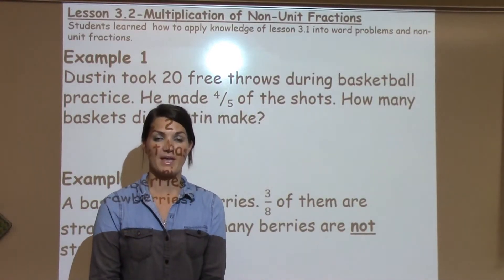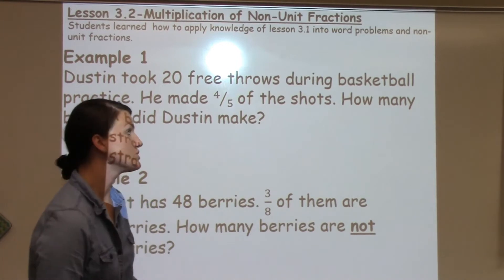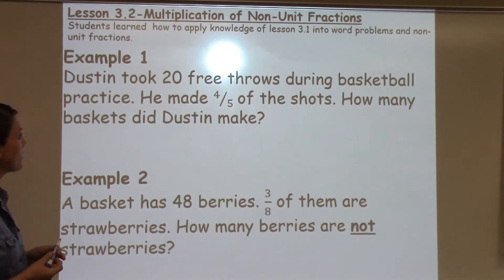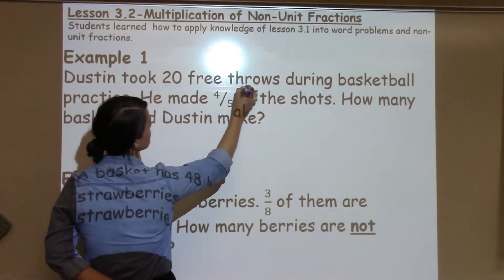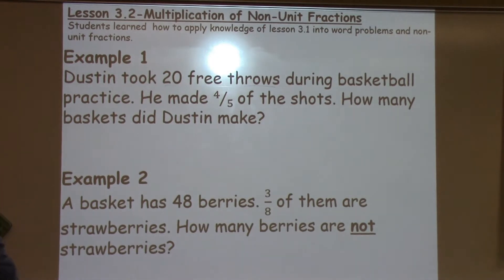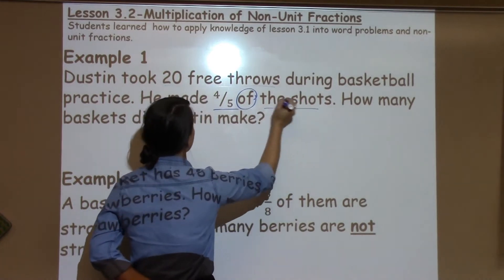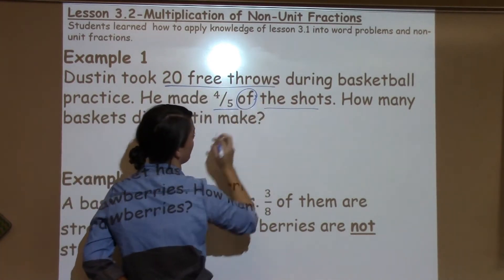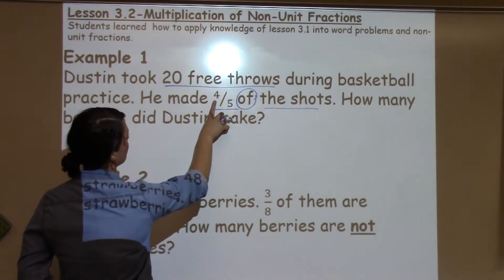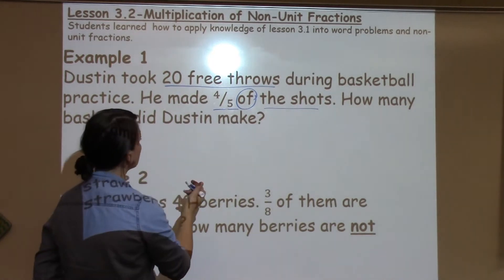Welcome to 3.2's Math Moment. Today students learned how to multiply fractions that are not unit fractions — so they're going to have something different than just a one on top. The first example says: Dustin took 20 free throws during basketball practice. He made four-fifths of the shots. How many baskets did he actually make? So I need to find four-fifths of 20, which in math 'of' means multiply.